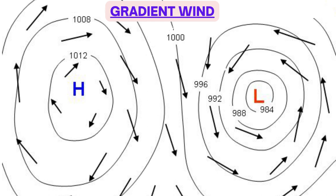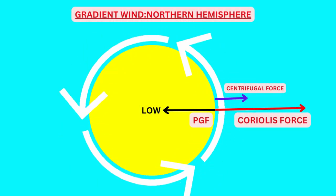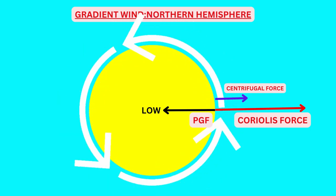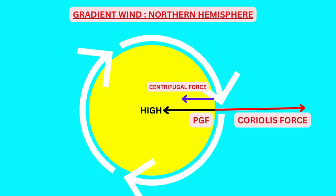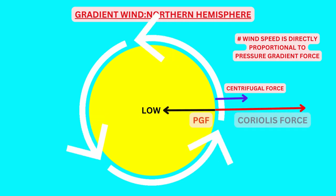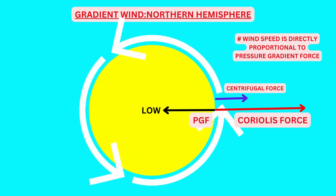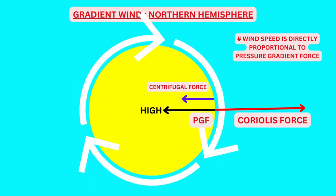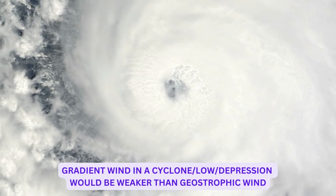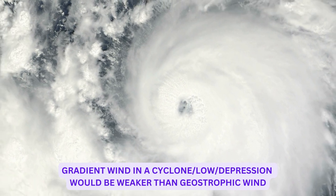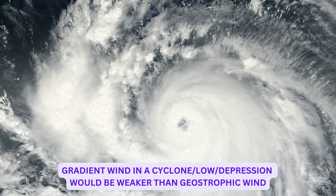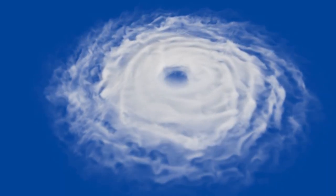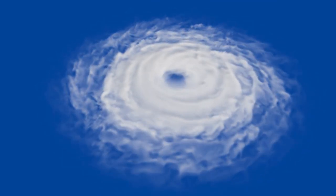In gradient wind there are three forces. Pressure gradient force and Coriolis force will always oppose each other, but centrifugal force will assist or add to the Coriolis force in a cyclone, low, or depression, and oppose the Coriolis force in an anticyclone or high. So this additional centrifugal force will tend to slow down the speed of winds in a cyclone, low, or depression, and accelerate the wind speed in an anticyclone or high, for the same given pressure gradient force. So gradient wind in a cyclone, low, or depression would be weaker than geostrophic wind, and gradient wind in an anticyclone or high would be stronger than geostrophic wind. This does not mean that both types of wind are blowing at the same time — it is just that which wind modeling will give what kind of prediction for wind speed.